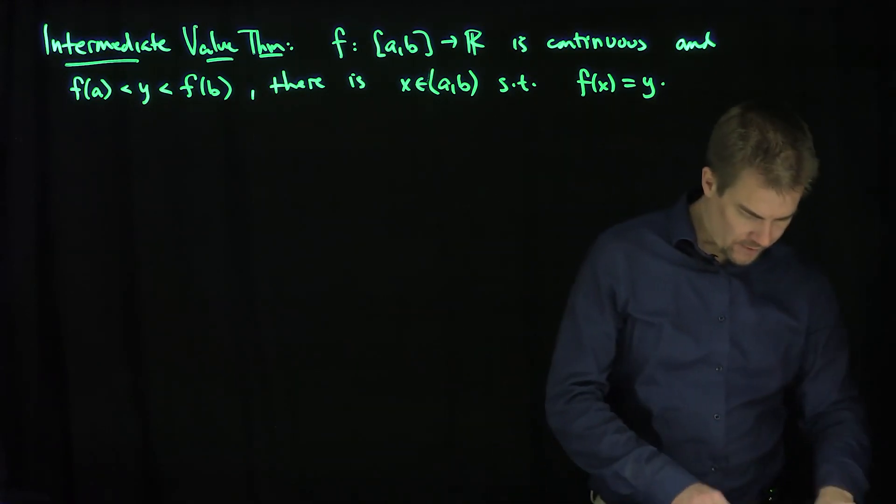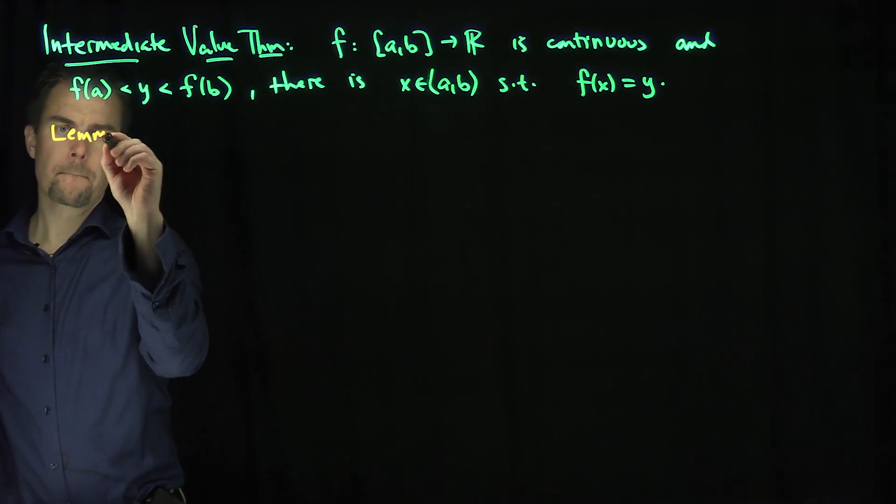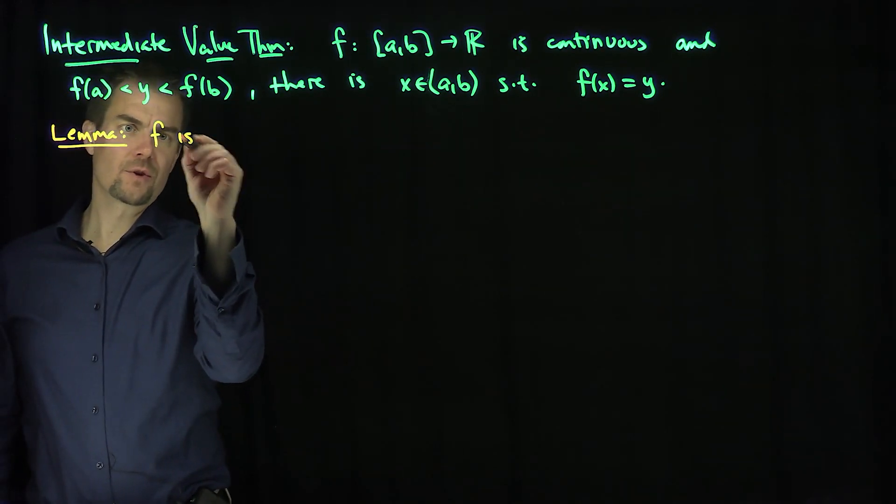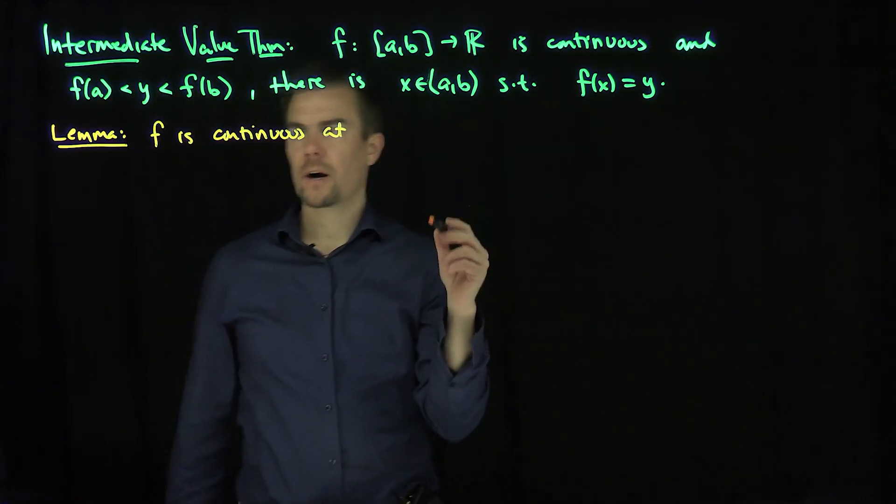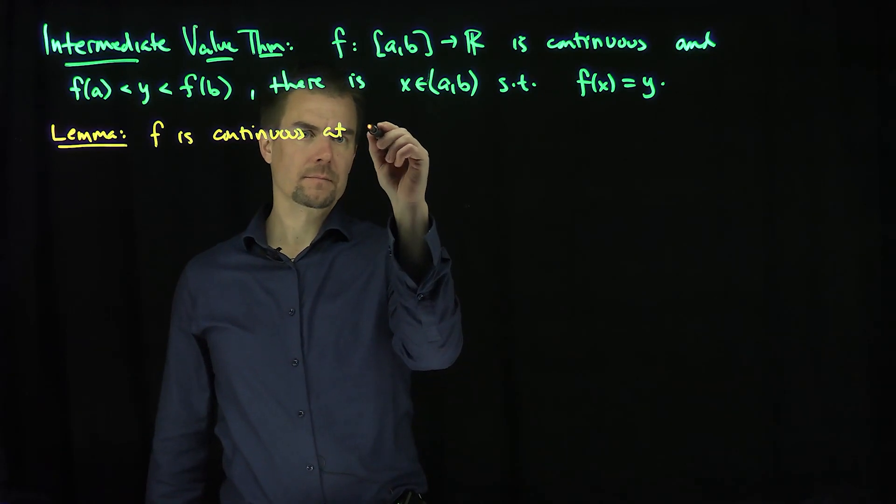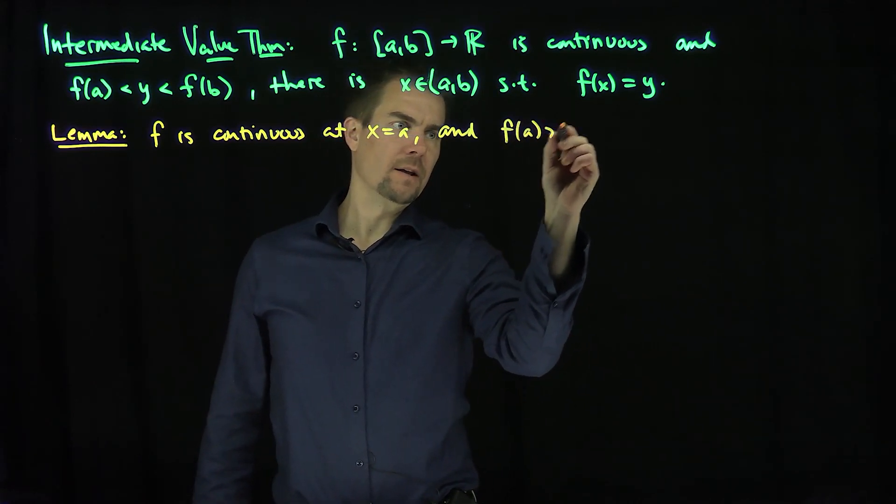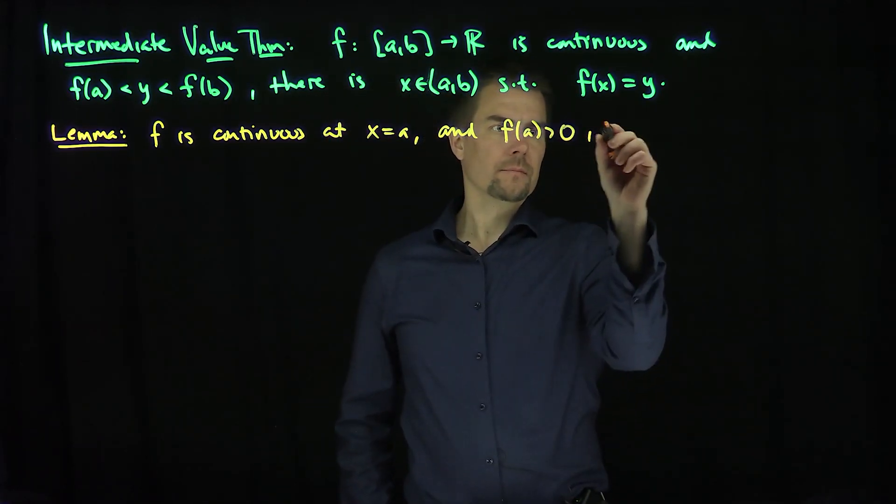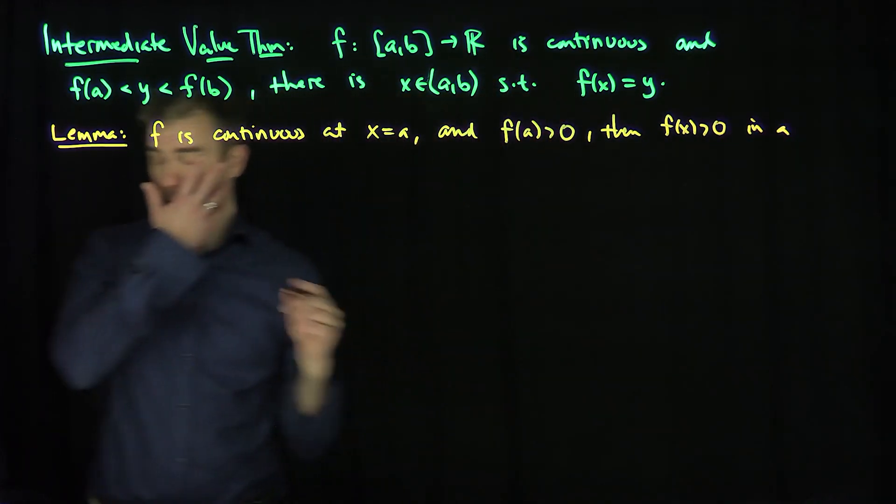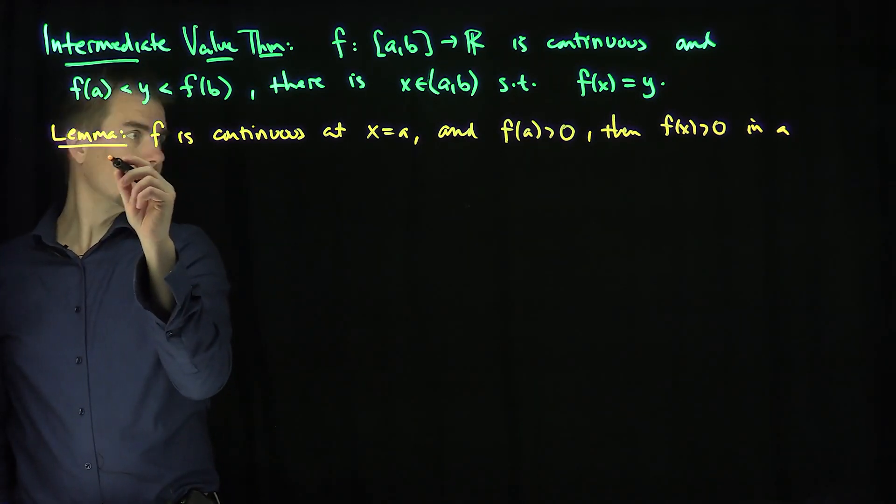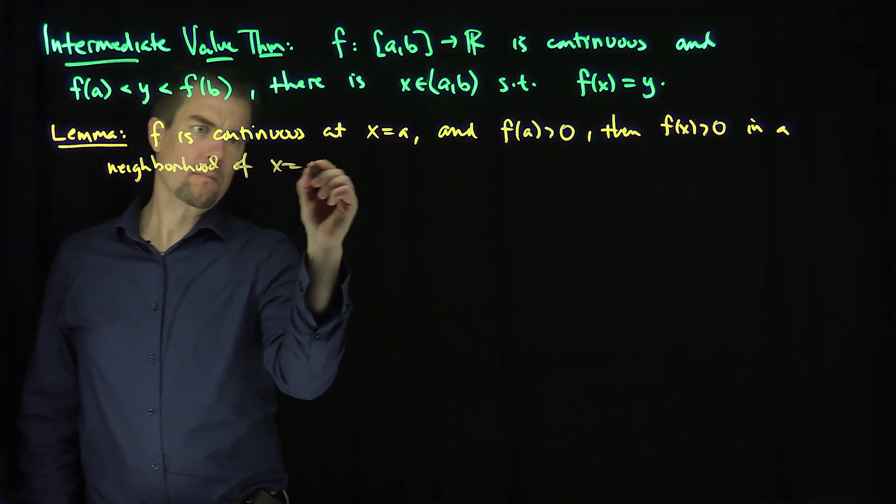We're going to need one preliminary result for this. Here's the lemma: Let's assume that f is continuous at a point a, and f(a) is greater than zero. Then f(x) is greater than zero in a neighborhood of a.